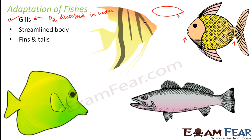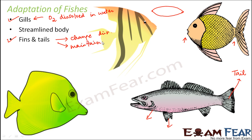Fins and tails together help in movement through water. The gills are located here on the fish; the fins are here, and this is the tail. The tail controls the direction during movement, while the fins help maintain balance in water as the fish moves. Together, fins and tail help in changing direction and maintaining balance. Scales cover the entire body of the fish — they protect the fish and also help in easy movement through water.